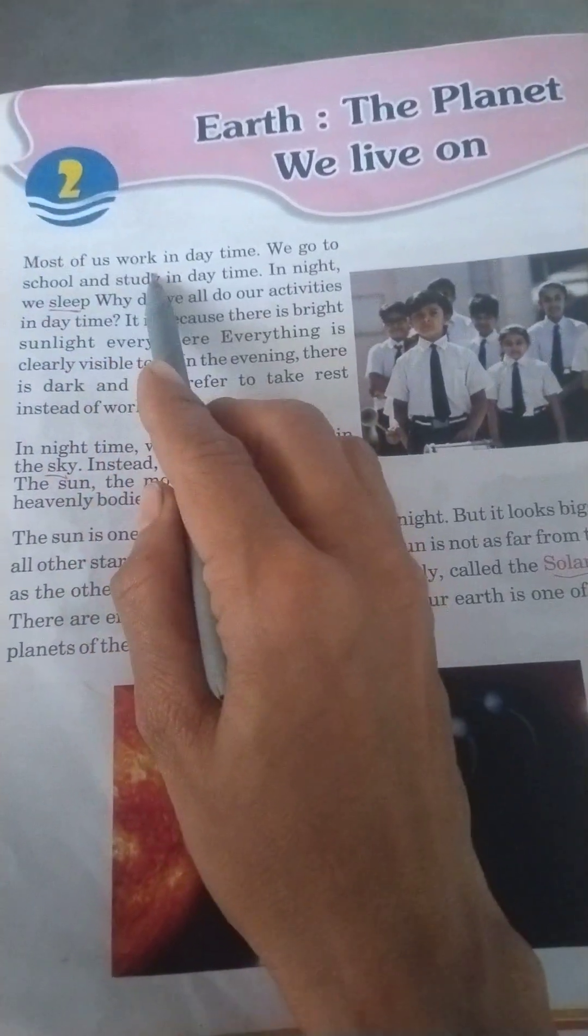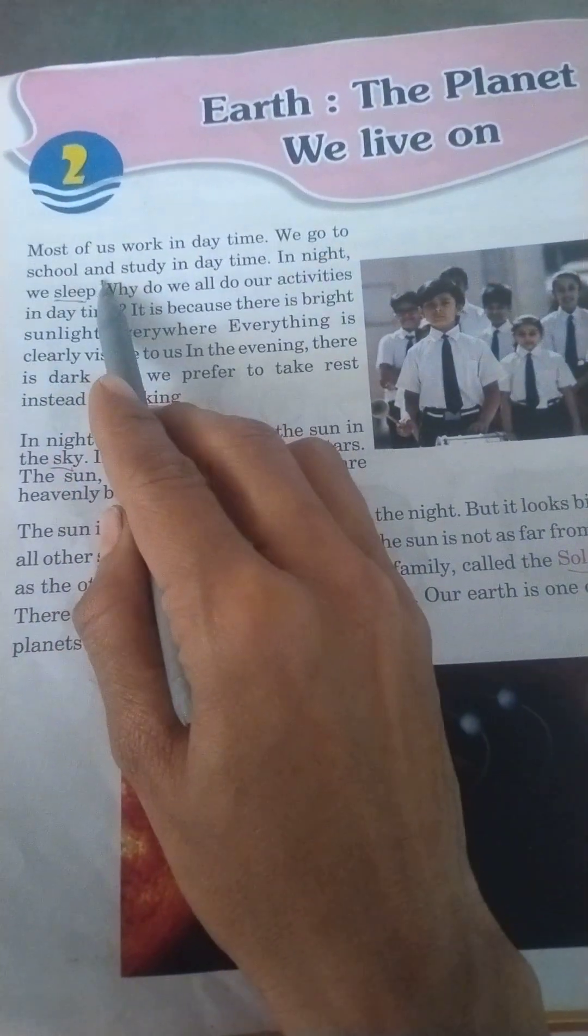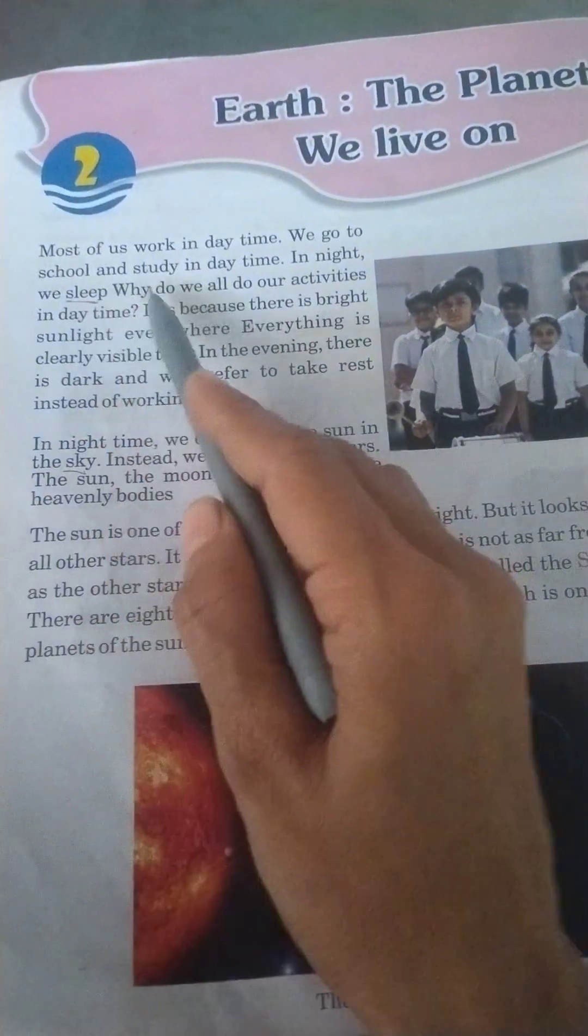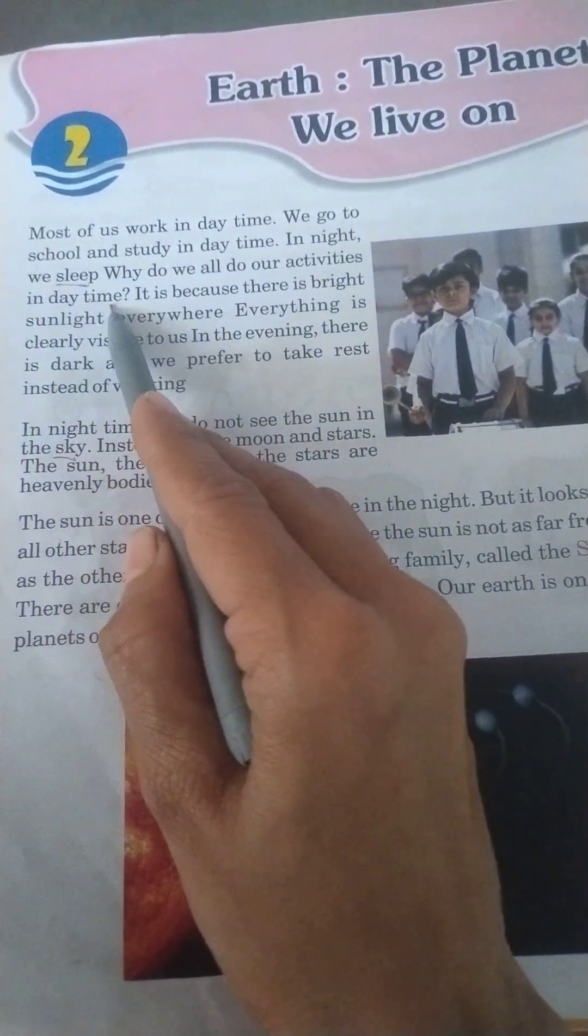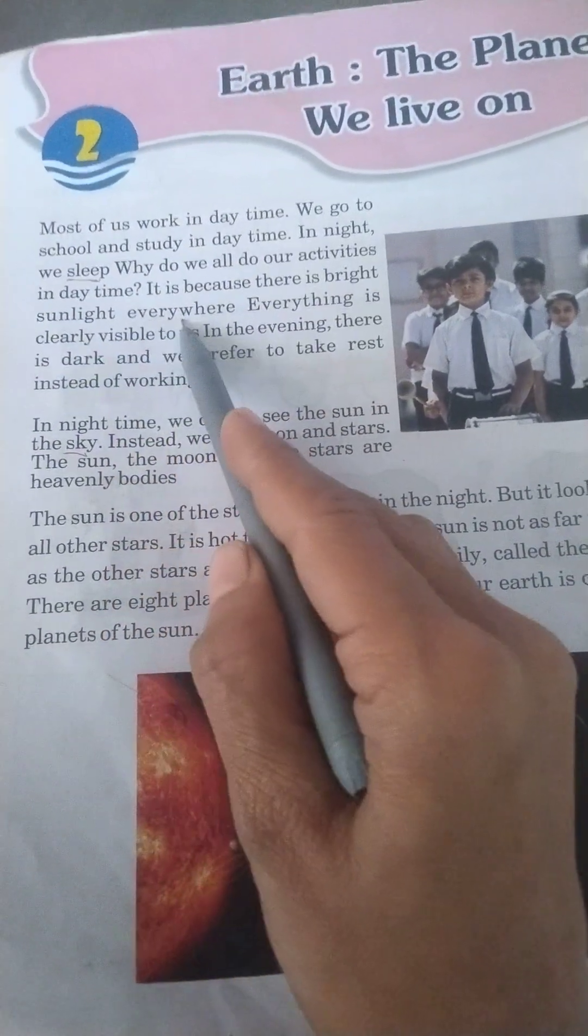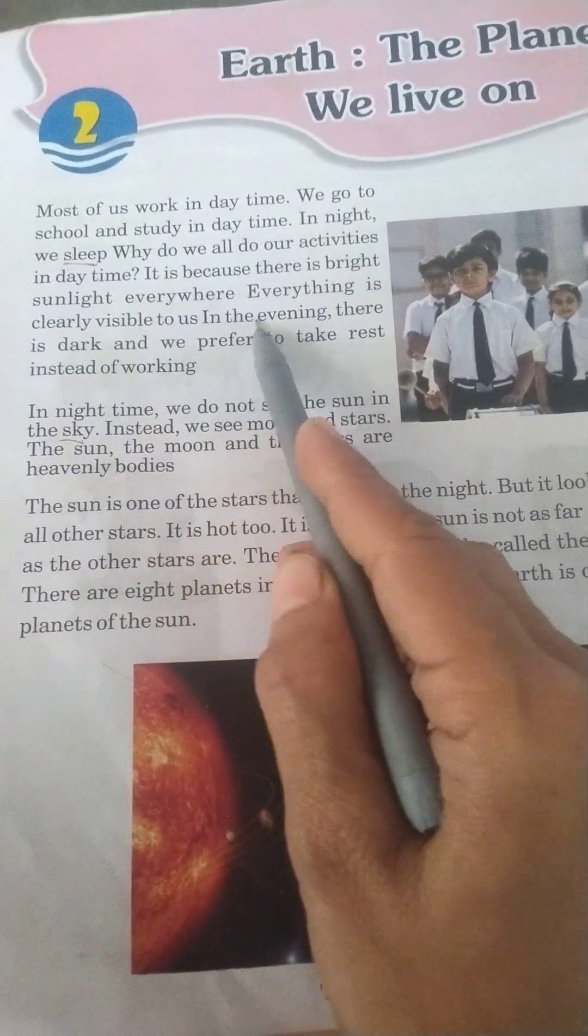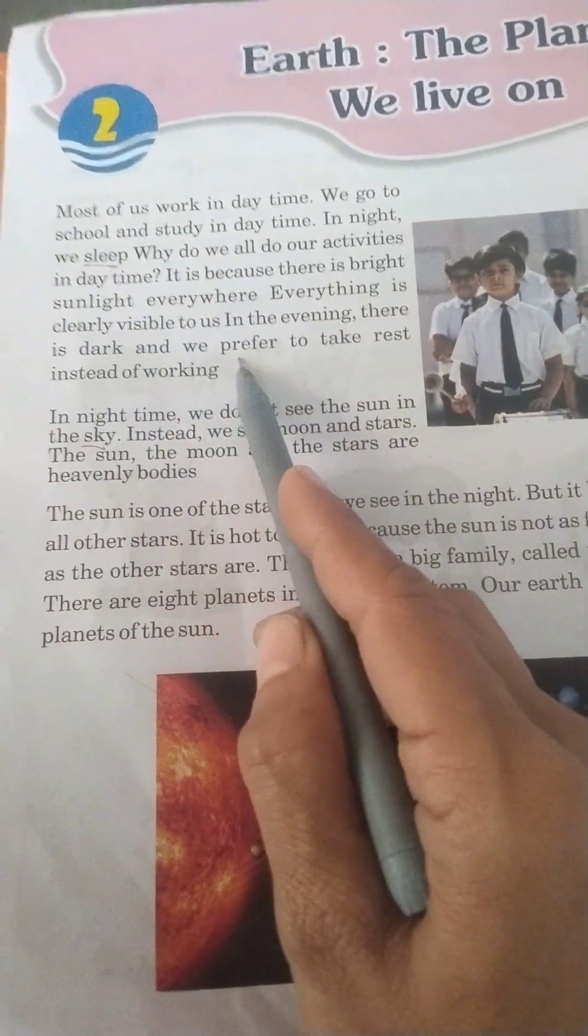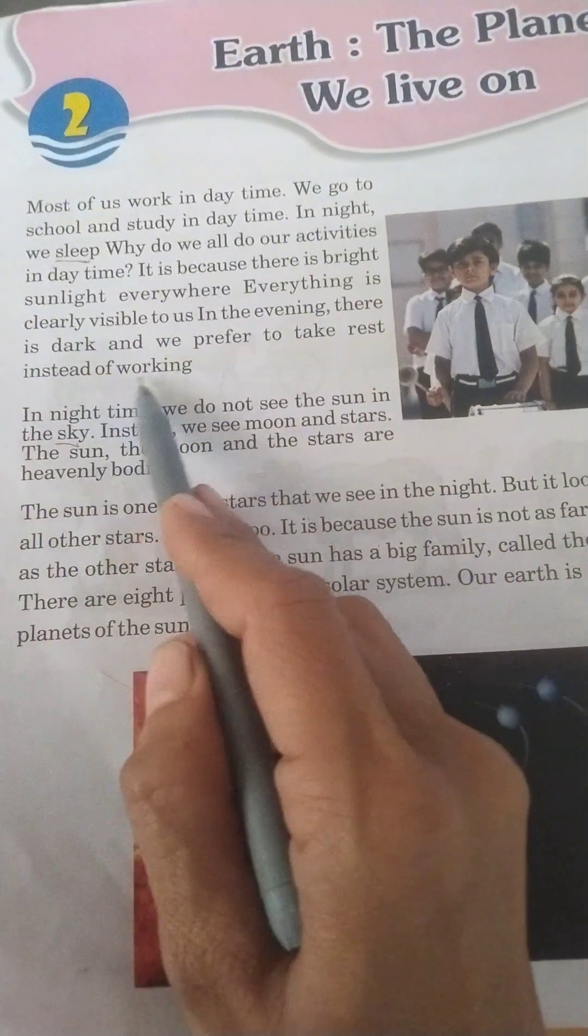Most of us work in daytime. We go to school and study in daytime. In night, we sleep. We do our activities in daytime. It is because there is bright sunlight everywhere. Everything is clearly visible to us. In the evening there is dark and we prefer to take rest instead of working.